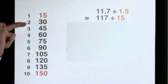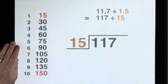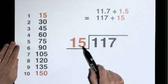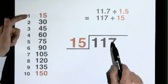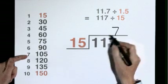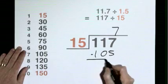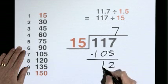Here's the 15 times table. Starts at 15, lands on 150. 15 goes into 117, 7 times. 7 fifteens are 105. Subtract to find the remainder. Remainder 12.